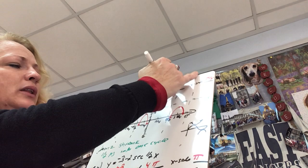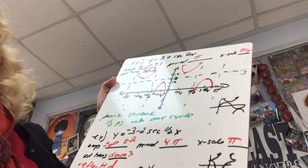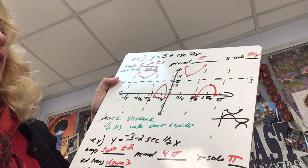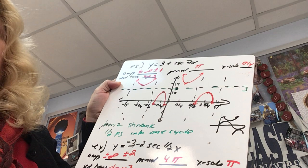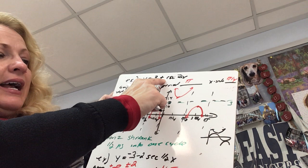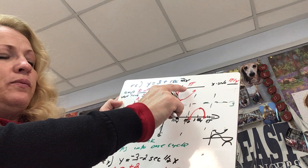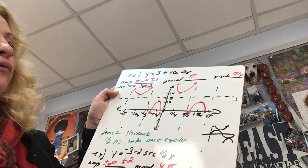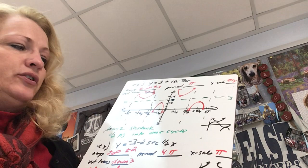The next example is y equals 3 plus cosecant of 2x. Listing the parameters: technically the amplitude is plus or minus infinity, but my key points — relative max and min — will be one away from the horizontal axis. The period is two pi divided by 2, which is pi. Dividing by 4 gives an x-scale of pi over 4, so I'll be counting by 45 degrees. This graph is moved up three.